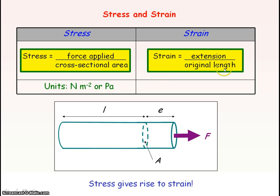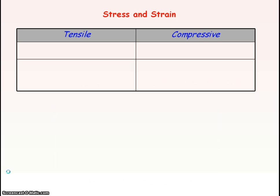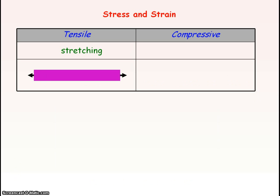When we apply this stress, the material extends and we have a strain. Strain is defined as extension divided by the original length — the ratio of extension to original length, or extension per unit original length. Strain has no units because meters divided by meters cancels out. You can have tensile stress and strain, meaning you are stretching or extending the material, or compressive stress and strain, meaning you are squashing or reducing the size of the material.